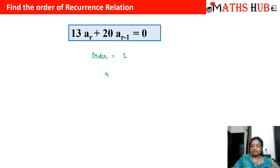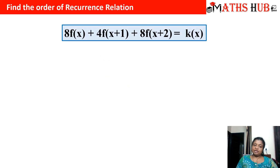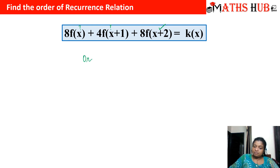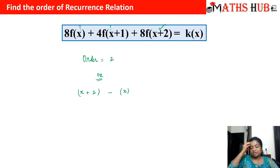The highest suffix occurring is r and the lowest is r-1, and r minus (r-1) = 1, confirming the order is 1. For the relation 8f(x) + 4f(x+1) + 8f(x+2) = k·x, to calculate f(x+2) you need f(x) and f(x+1), so you need two terms. The order is 2. By the subscript method, the highest suffix is x+2 and the lowest is x; subtracting gives 2. The order is confirmed to be 2.